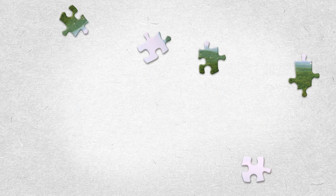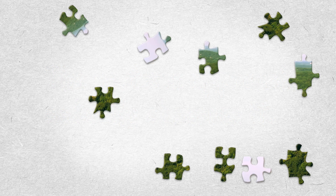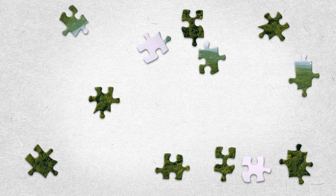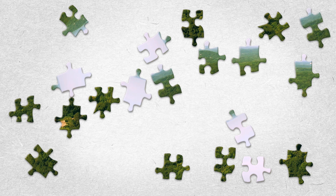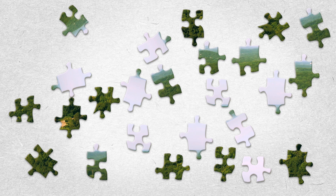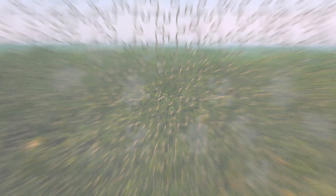Reductionism explains that studying the individual parts — seeing each jigsaw piece in turn — is all you need to do to see the picture. The systems approach, on the other hand, says: do the puzzle and look at the picture.